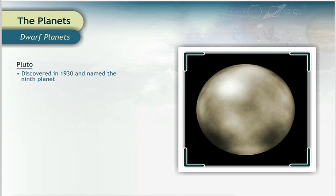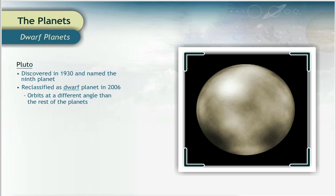Pluto was discovered in 1930 and named the ninth planet from the Sun. However, Pluto was reclassified as a dwarf planet in 2006. Pluto was reclassified because it orbits the Sun at a different angle than the rest of the planets.